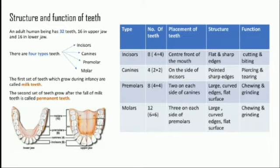Premolars are 8 in number — 4 in the upper and 4 in the lower jaw, 2 on each side of the canines. They have large curved edges and a flat surface, and are known as the chewing and grinding teeth. Molars are 12 in number — 6 in the upper and 6 in the lower jaw, 3 on each side of the premolars. They also have large curved edges, a flat surface, and are known as the chewing and grinding teeth.